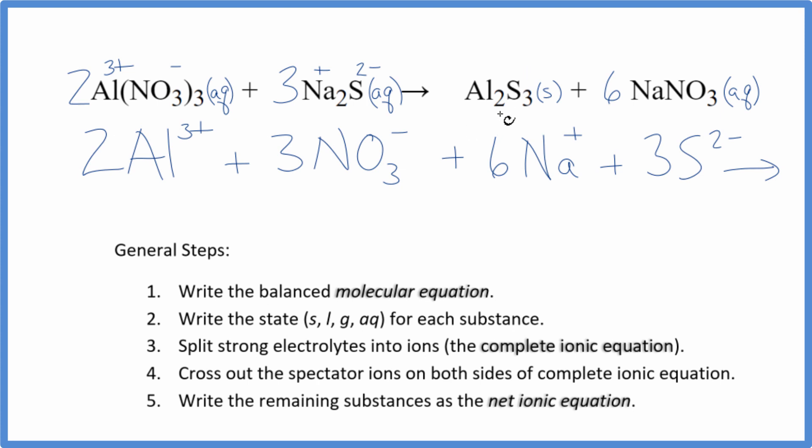For the products, in net ionic equations, we don't split solids apart. We keep them together. So we're just going to write Al2S3. That'll be a solid. Then for the sodium nitrate, we have a positive and a negative. So we have 6 sodiums, just like in the reactants, plus 6 nitrates.